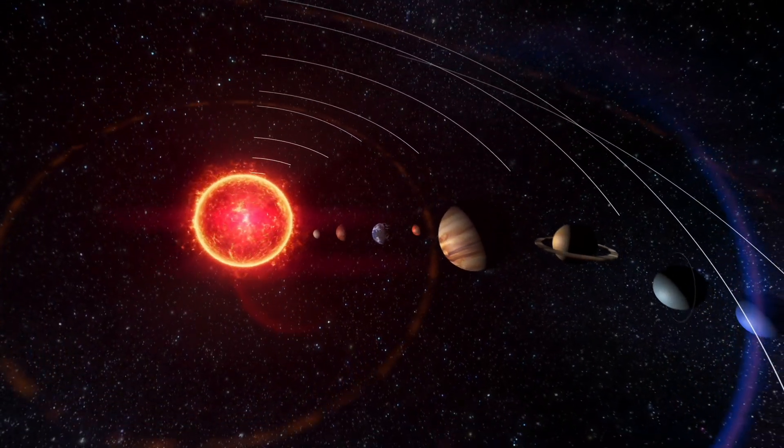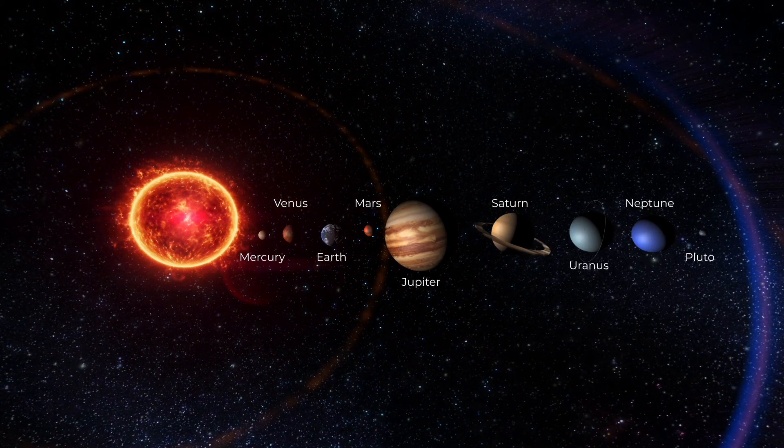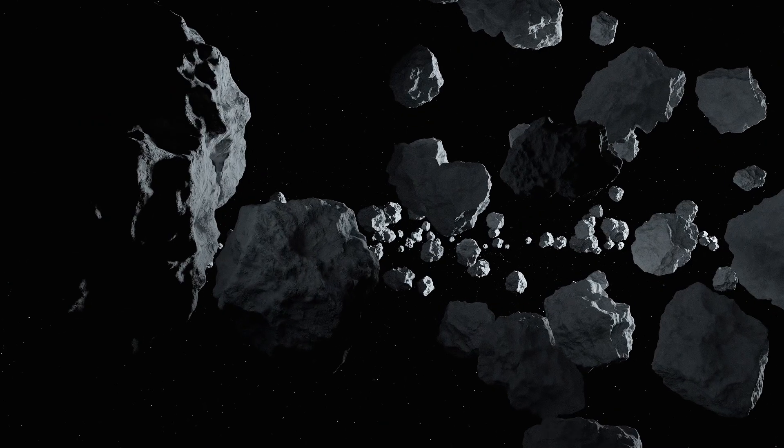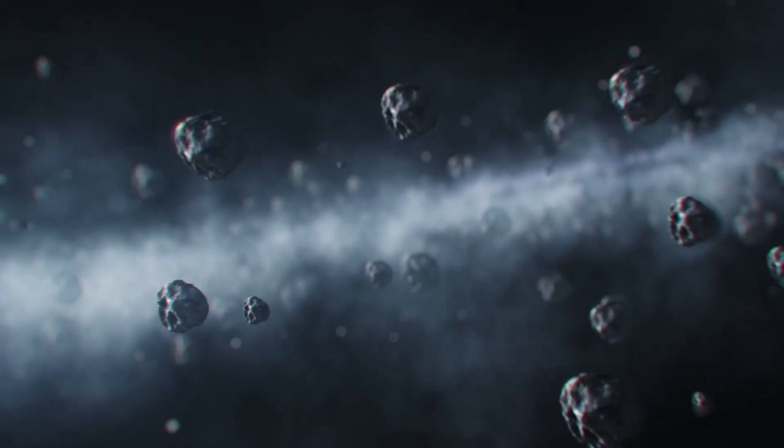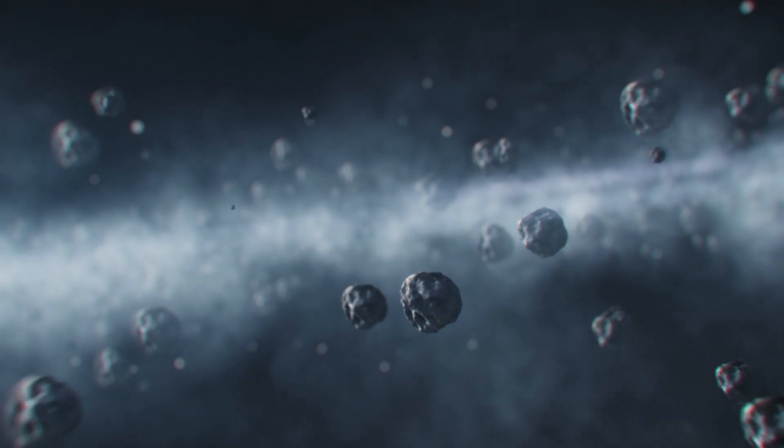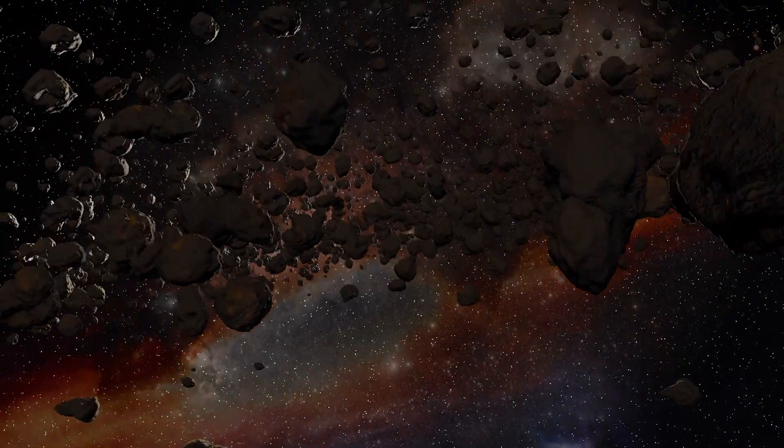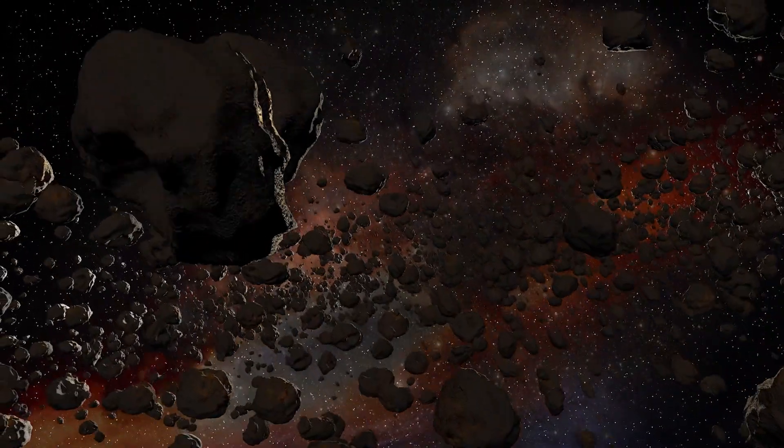The majority of asteroids reside in the asteroid belt, a region between the orbits of Mars and Jupiter. This vast collection of space debris is home to millions of asteroids, ranging from the massive Ceres, which is nearly 600 miles in diameter, to tiny space rocks measuring only a few meters across.